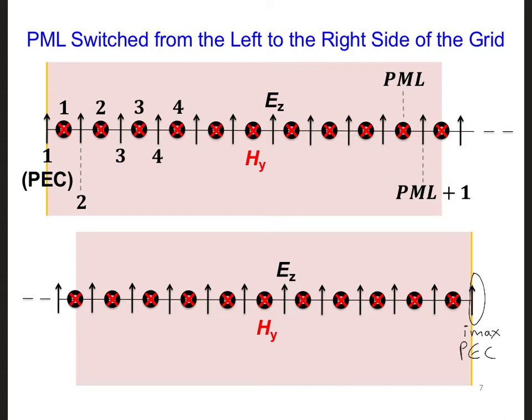Then the HY just to the left of this last EZ component is at Imax minus 1, since our grid starts on an EZ component. And the EZ component one half of a cell to the left of that is also Imax minus 1.